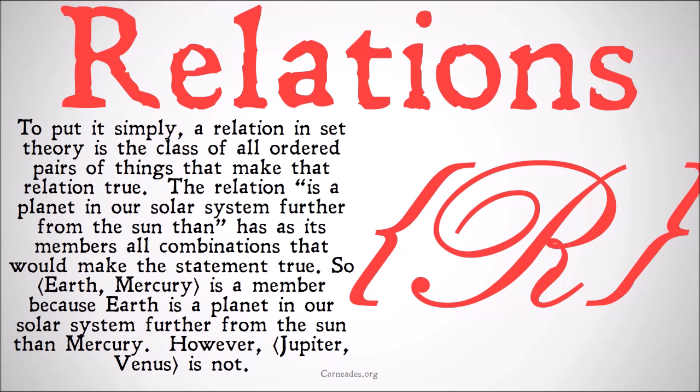To put it simply, a relation in set theory is the class of all ordered pairs of things that make that relation true. The relation 'is a planet in our solar system further away from the sun than' has as its members all combinations that would make the statement true. So Earth-Mercury is a member because Earth is a planet in our solar system further from the sun than Mercury, but Mercury-Earth would not be — in the same way Jupiter-Venus would not.